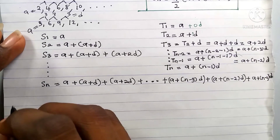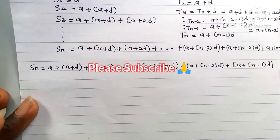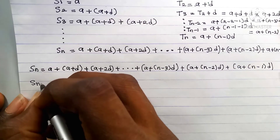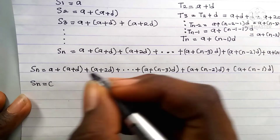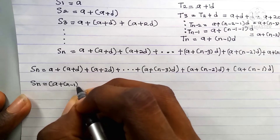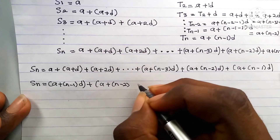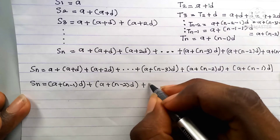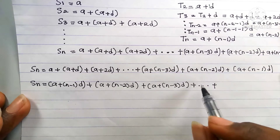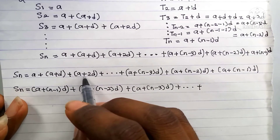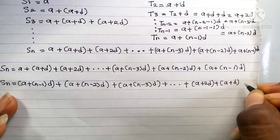Now we're going to repeat Sn but starting from the back. Since it's a sum we can write the terms in reverse order: Sn equals (a plus (n minus 1)d) plus (a plus (n minus 2)d) plus dot dot dot plus (a plus 2d) plus (a plus d) plus a.